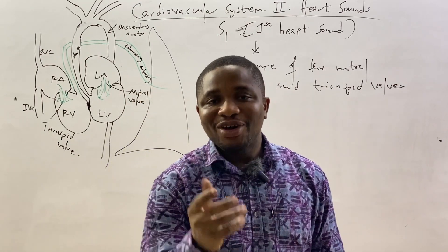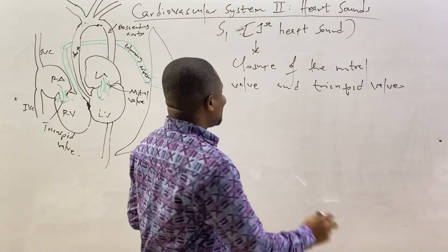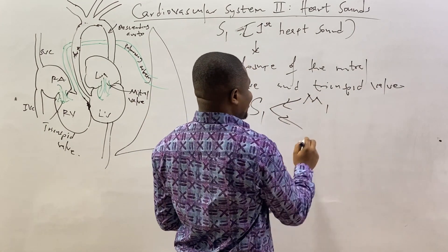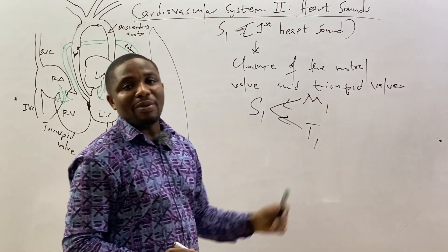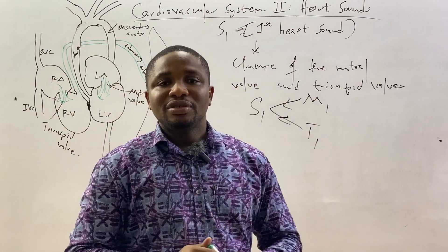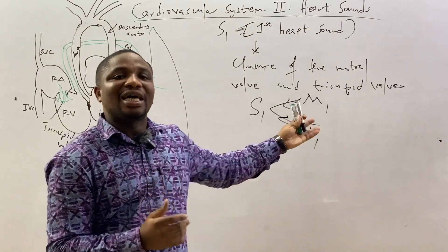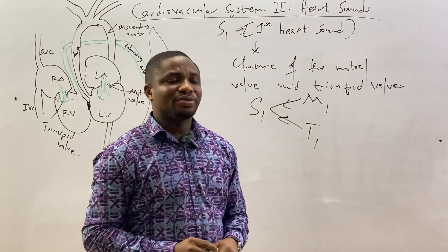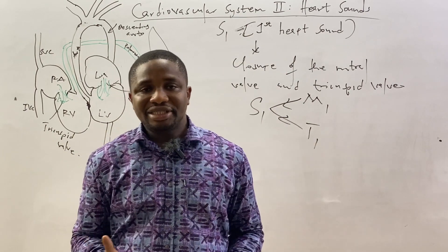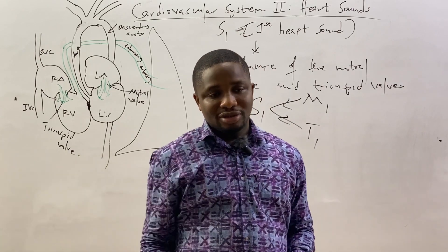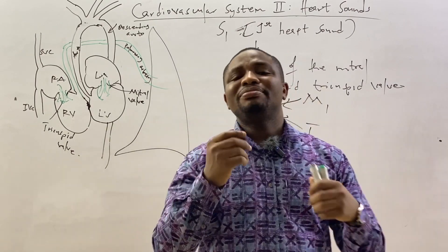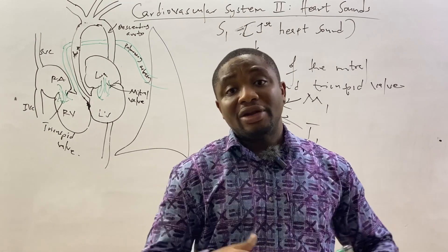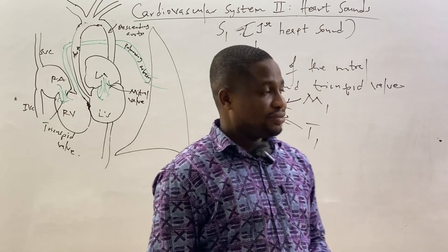The first heart sound has a mitral component (M1) and a tricuspid component (T1). The closure of these valves produces the sound known as the first heart sound. In certain cases the first heart sound can be loud, and in certain cases it can be soft.